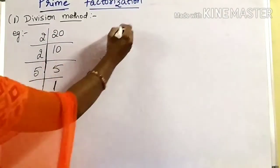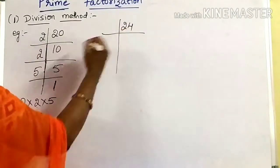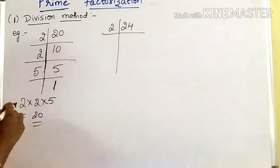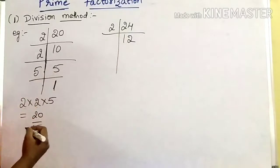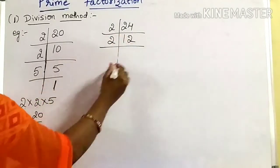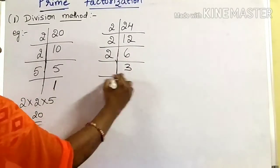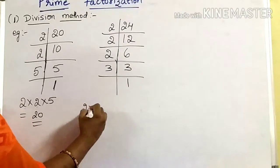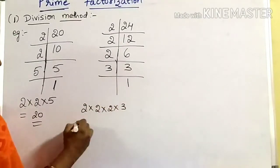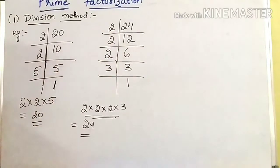I will take one more example: 24. The smallest prime number is 2. Is 24 divisible by 2? Yes. 24 divided by 2 is 12. Again, 12 divided by 2 is 6. Again, 6 divided by 2 is 3. Will 3 go in the 2 table? No. So the next prime number is 3. 3 divided by 3 is 1. Now you got the quotient as 1. So the answer is 2 into 2 into 2 into 3. 2 times 2 is 4, 4 times 2 is 8, 8 times 3 is 24. When you multiply all these factors, you get the number itself. This method is known as the division method of prime factorization.